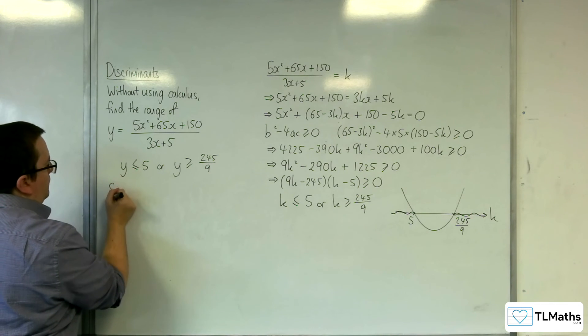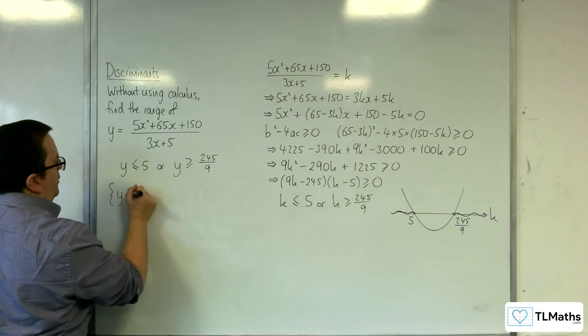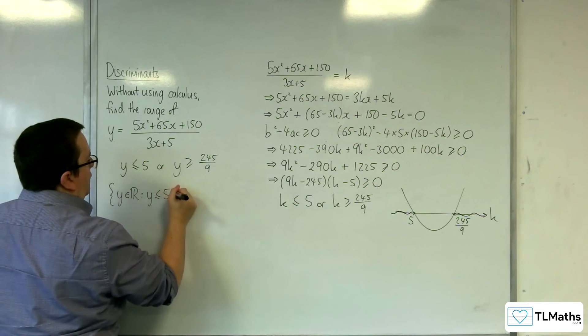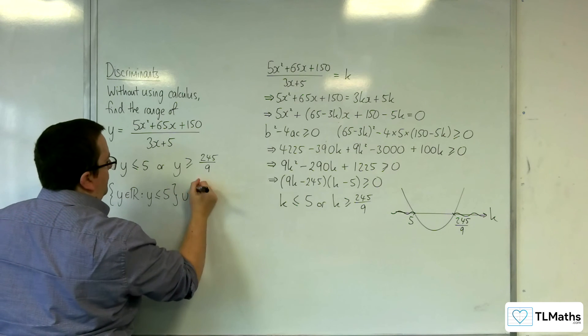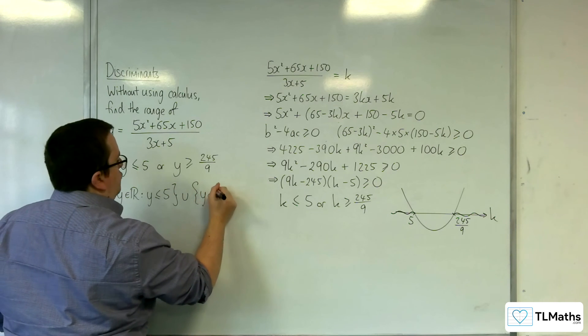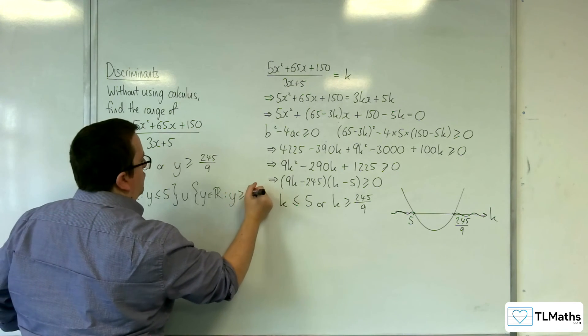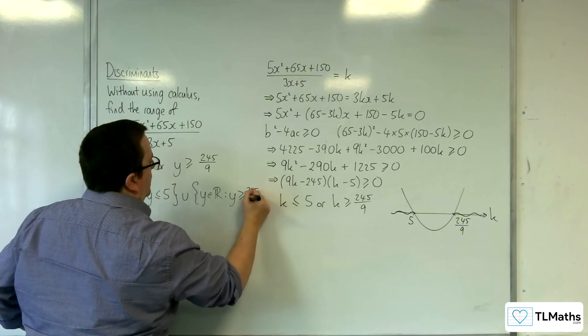Now, if you need that in set notation, that would be y belongs to the real numbers, such that y is less than or equal to 5, union, y belongs to the real numbers, such that y is greater than or equal to 245 over 9.